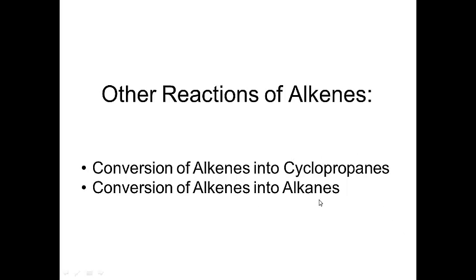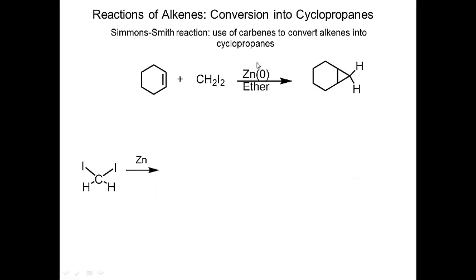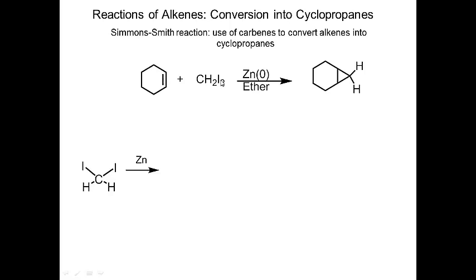We're going to talk about how to make alkenes into cyclopropanes as well as how to make alkenes into alkanes. This reaction is called the Simmons-Smith reaction: we have an alkene, diiodomethane in the presence of zinc metal, and the solvent is ether. The product is a cyclopropane — a three-membered ring. The CH2 from diiodomethane becomes the CH2 in the cyclopropane ring.